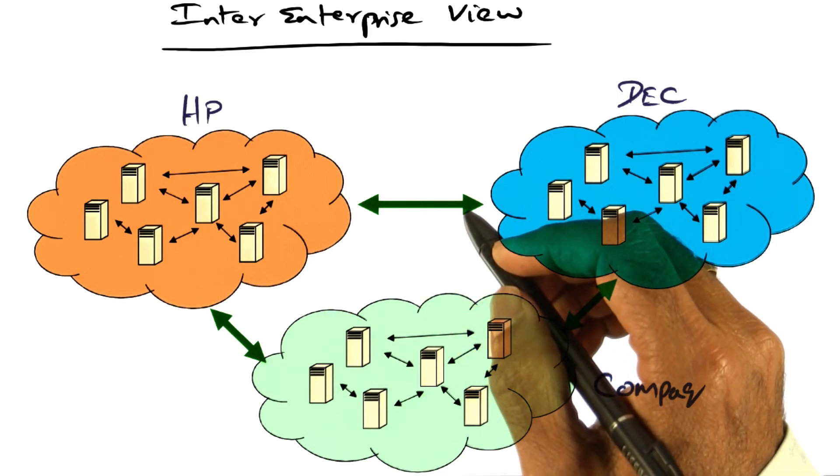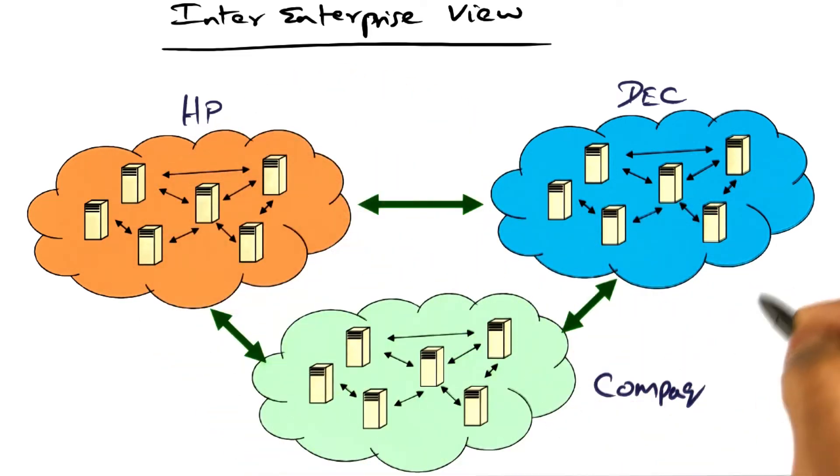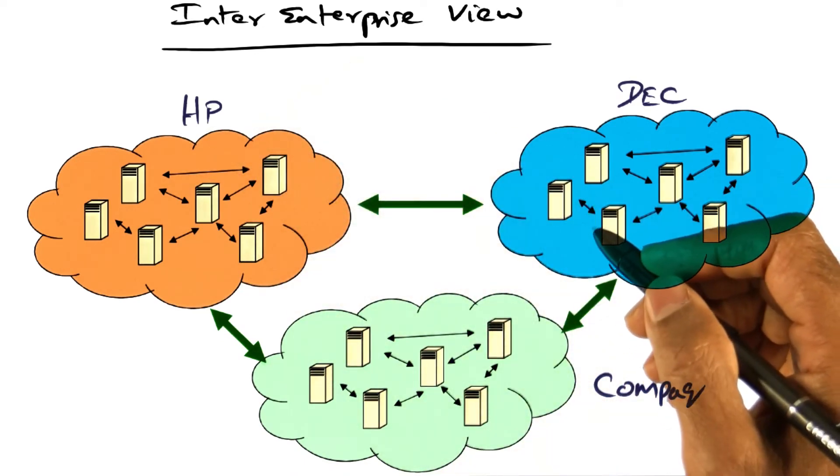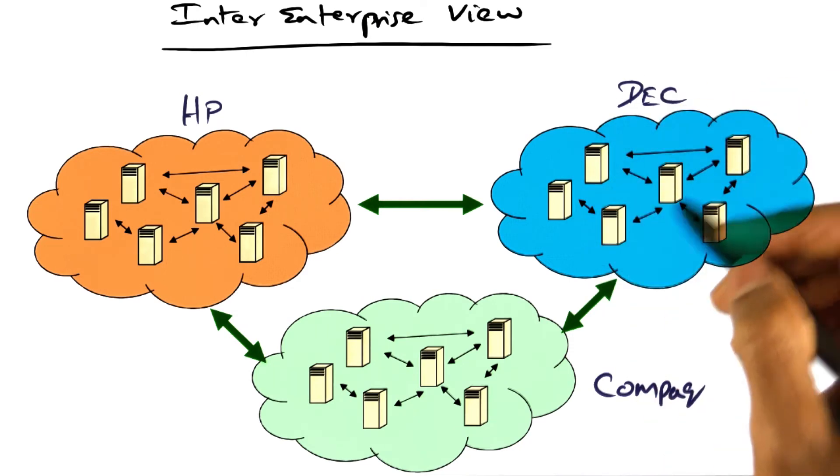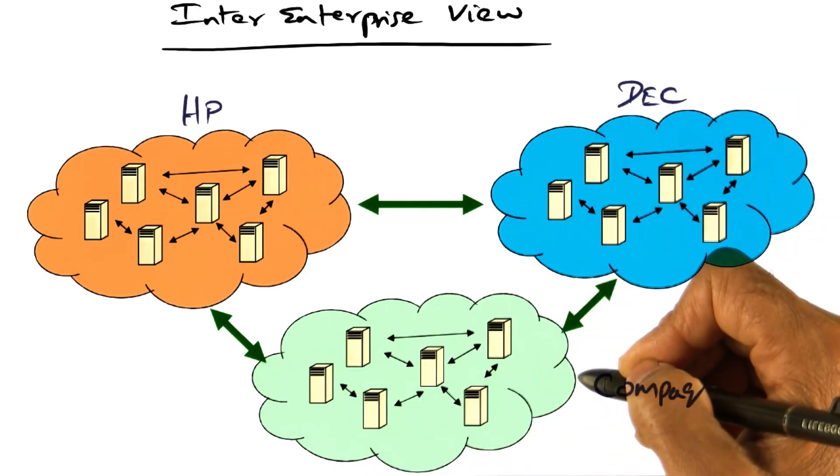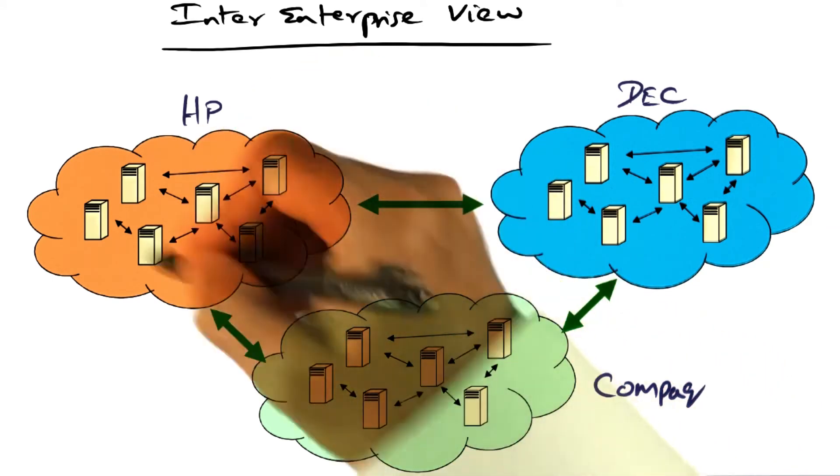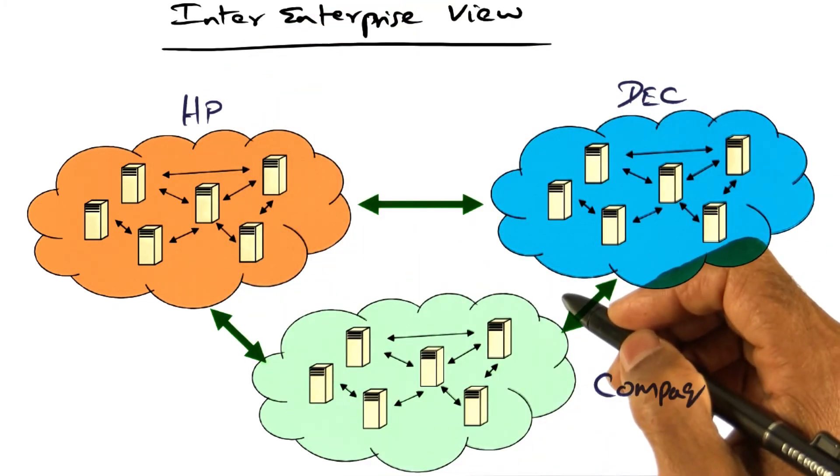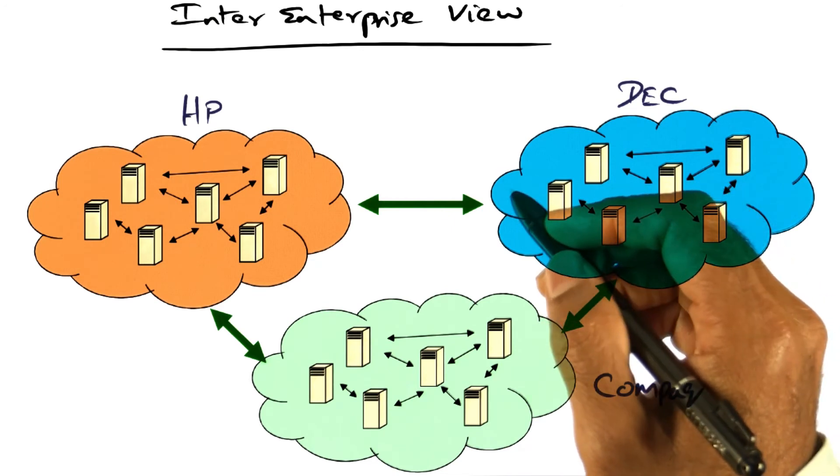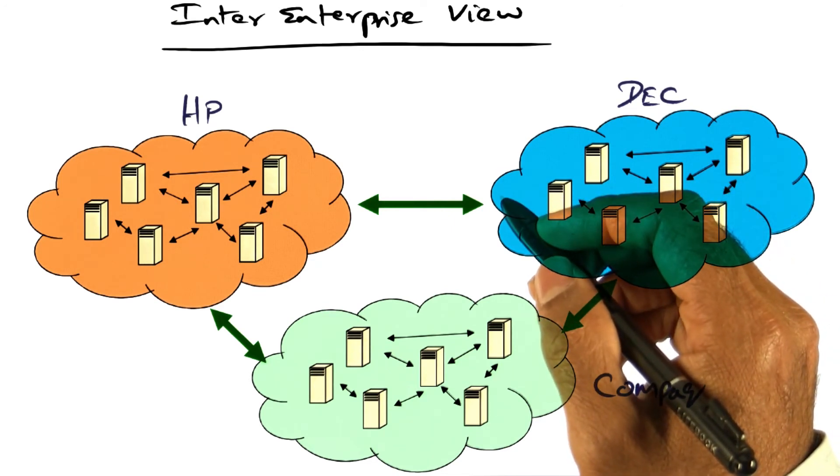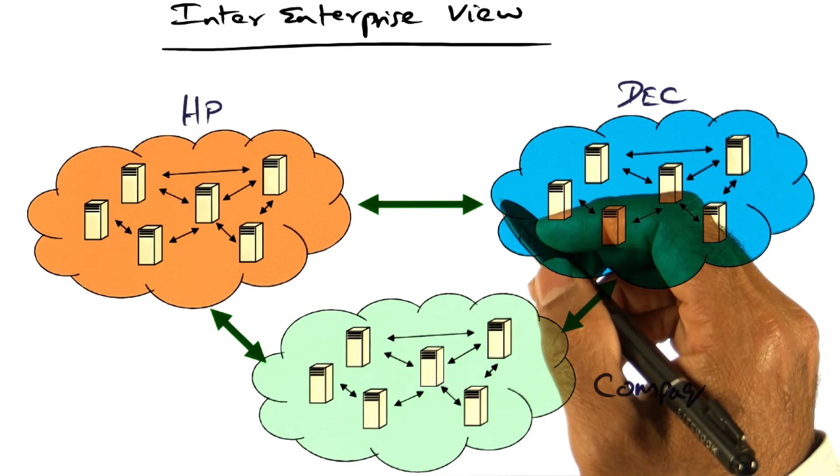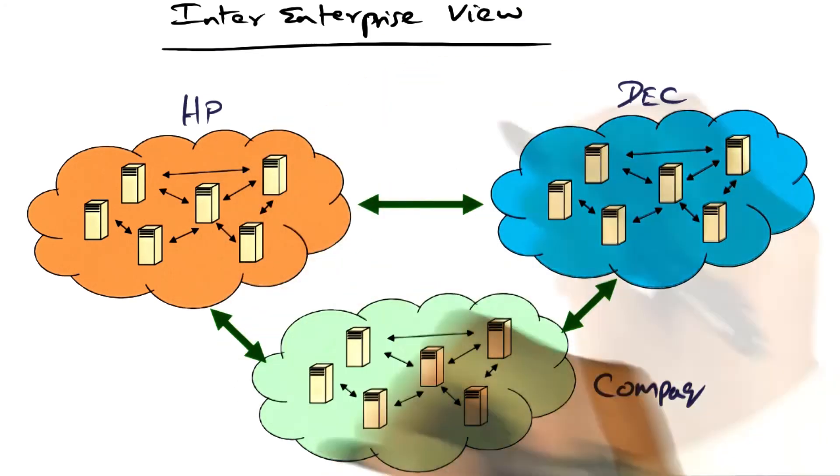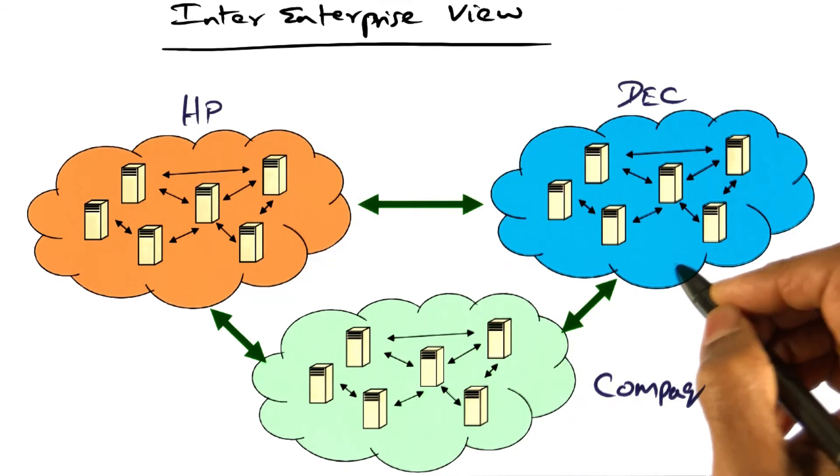And what is even more challenging is when enterprises merge. For instance, if three companies merge together, and this happened a while back, there was a company called Digital Equipment Corporation that got bought out by Compaq, and those two merged, and later on HP bought out Compaq. And so you can see that when things like this happen, the inter-enterprise view is much more complex. And now, when companies merge like this, the idea of an enterprise becomes an amalgam of three different entities coming together in this example.